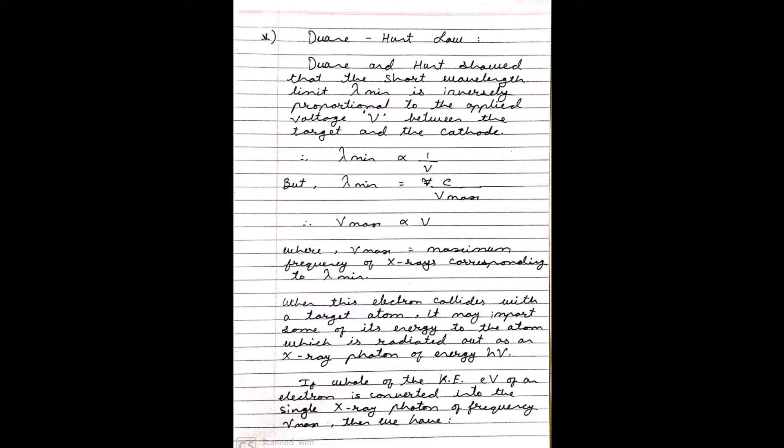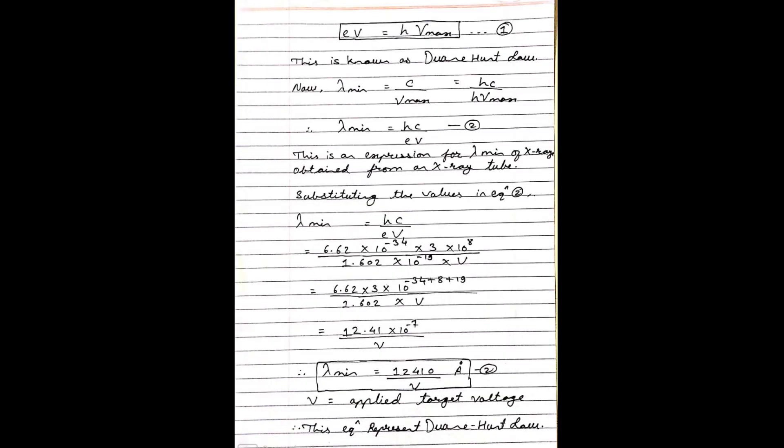If the whole of the kinetic energy eV of an electron is converted into the single x-ray photon of frequency nu max, then we have eV is equal to h nu max. This actually is called Duane's law.